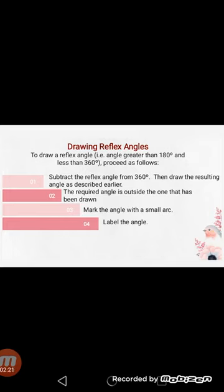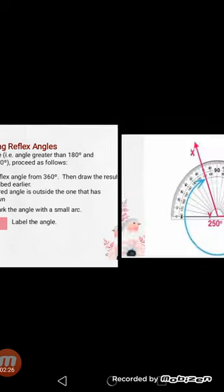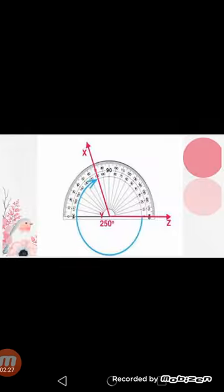And the last step is to label the angle, meaning you have to write that specific measurement of the reflex angle on the diagram. Here I have shared a picture to show the reflex angle, which is shown in blue color in the diagram, and we label the reflex angle in this way.